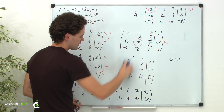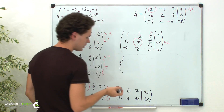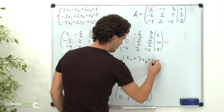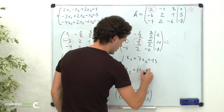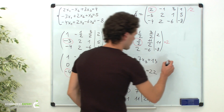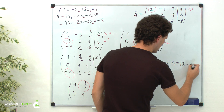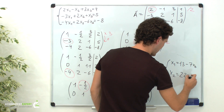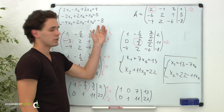Now let's return to our system of equations. As a system, it looks like this: x1 plus 7 times x3 equals 13, and x2 plus 11 times x3 equals 22. We can represent x1 and x2 through x3. So, x1 equals 13 minus 7 times x3, and x2 equals 22 minus 11 times x3. This is the solution for the given system.